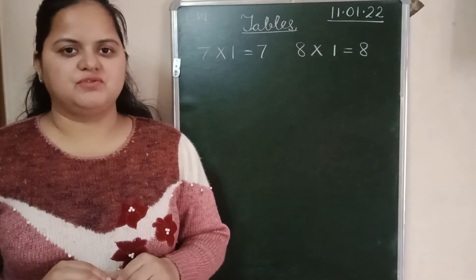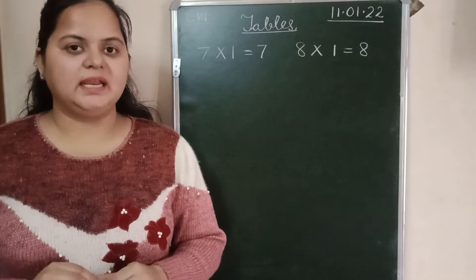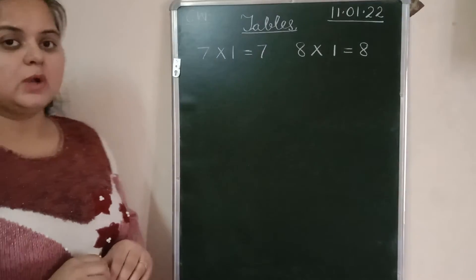8-7s are 56. 8-8s are 64. 8-9s are 72. And 8-10s are 80. Very good. Now, start writing.